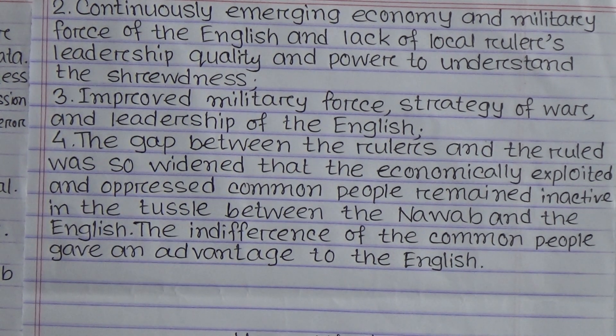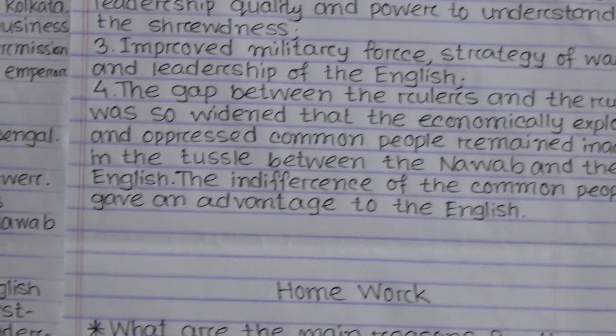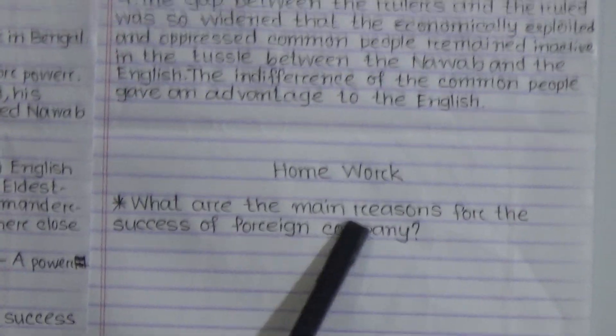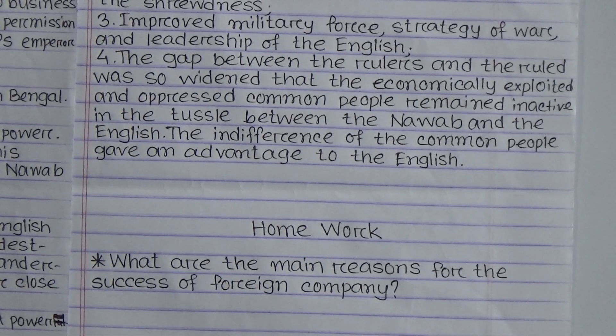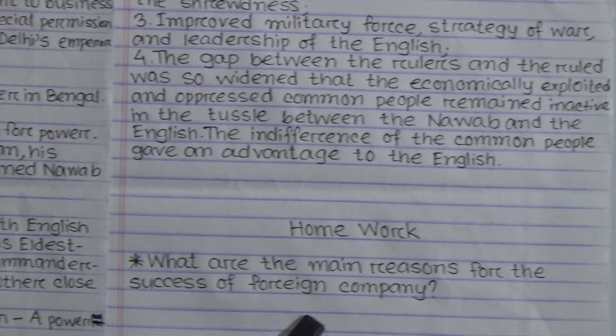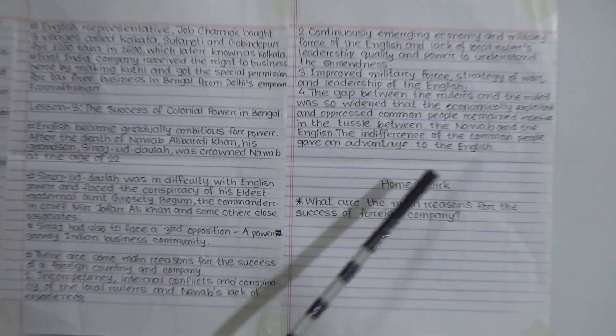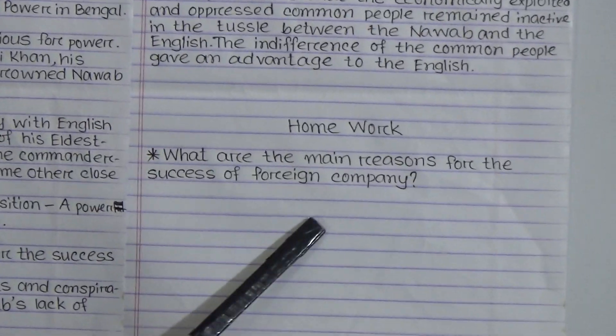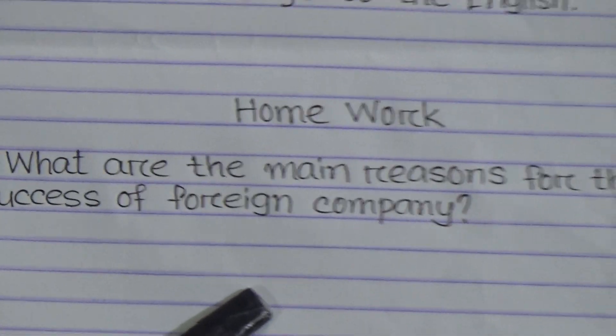Your homework question is: 'What are the main reasons for the success of the foreign company?' You can write these four points for the answer. Don't forget to write the lecture number and homework number at the top of your homework copy — lecture number is two and homework number is also two. Hope you have understood today's topic. Keep practicing at home and abide by your parents. Stay well. Allah Hafiz, Assalamu Alaikum.